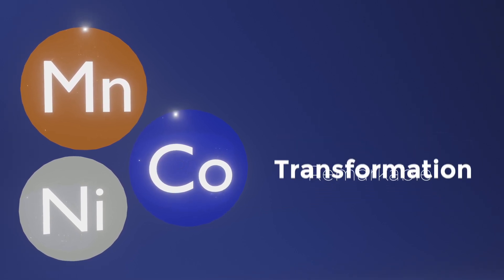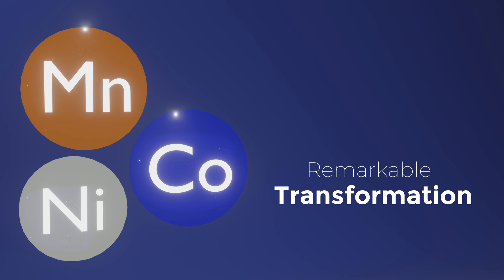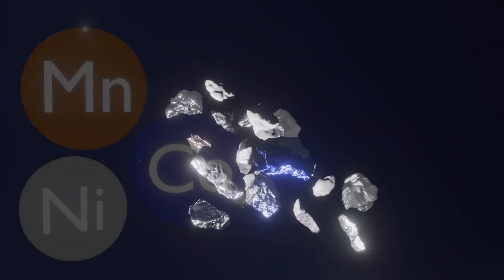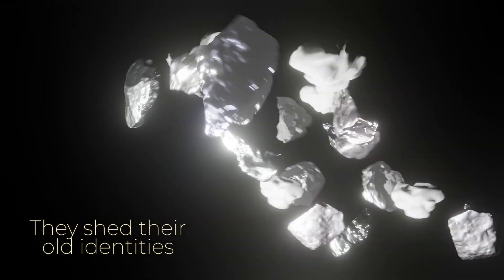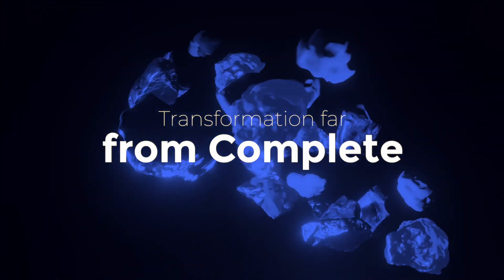Then these unassuming components go through a remarkable transformation. Through a process known as chemical precipitation, they shed their old identities, emerging as metal hydroxides. But their transformation is far from complete.